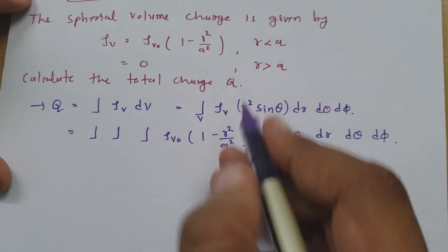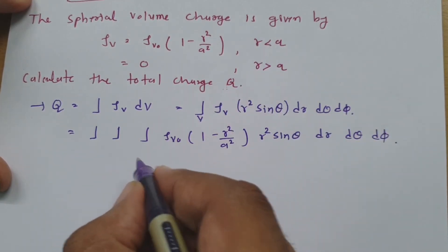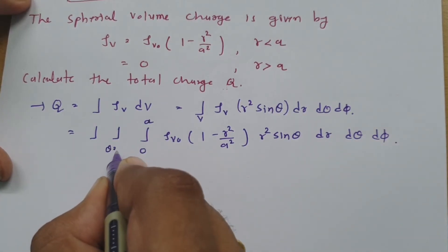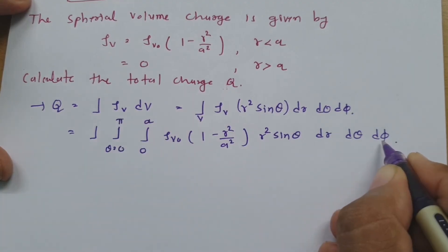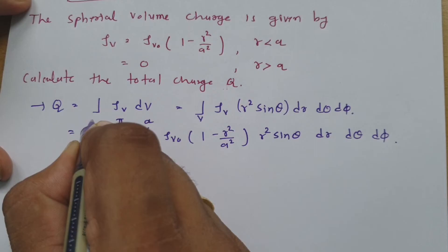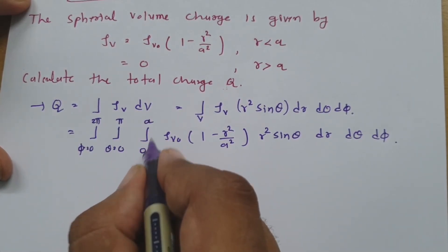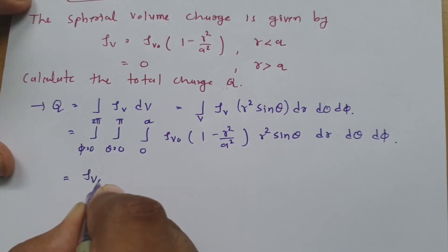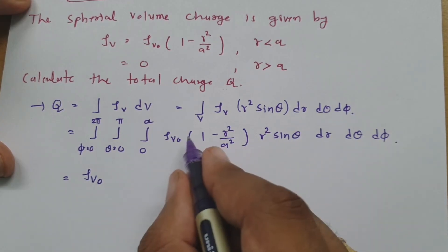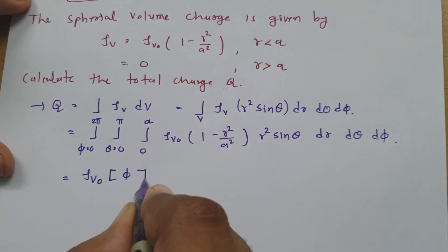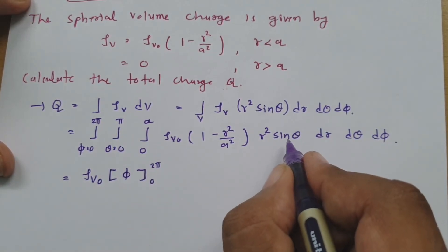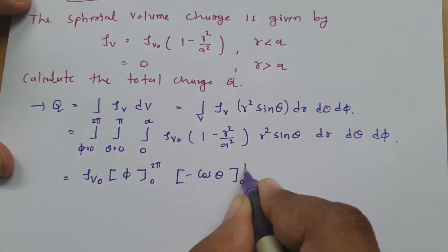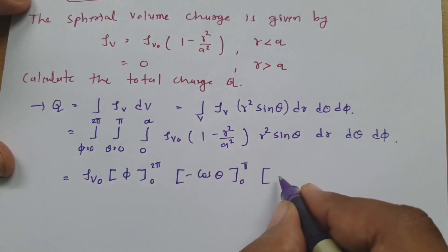Since rho_v exists for r less than a, r varies from 0 to a. For spherical coordinates, θ varies from 0 to π, and φ varies from 0 to 2π. Taking rho_v0 as a constant outside, and noting there is no φ dependence in the integrand, the φ integration gives 2π. For the θ term, integrating sin(θ) gives -cos(θ), evaluated from 0 to π.